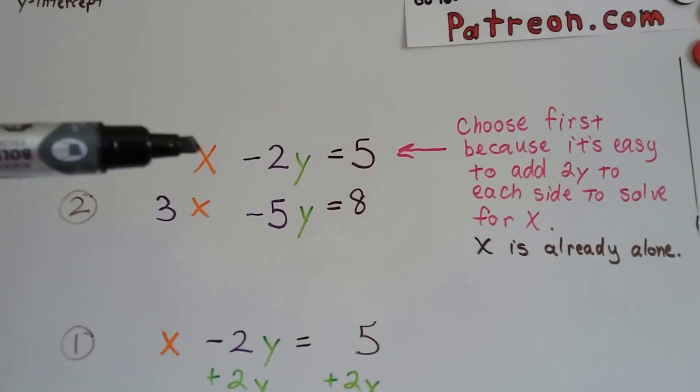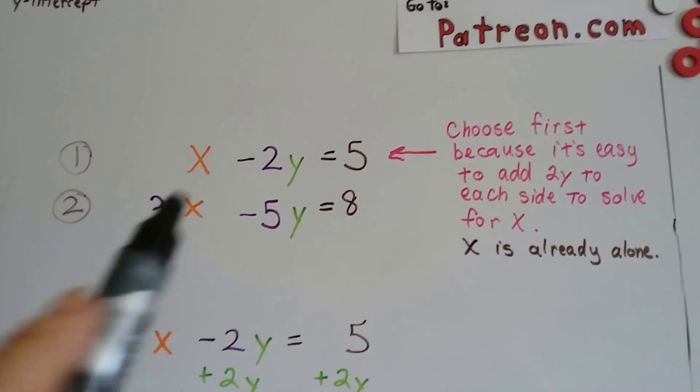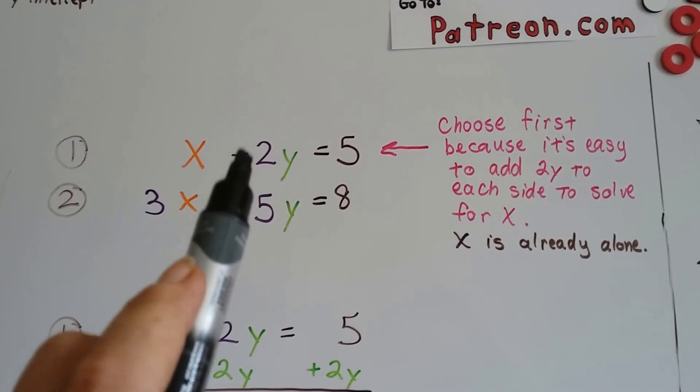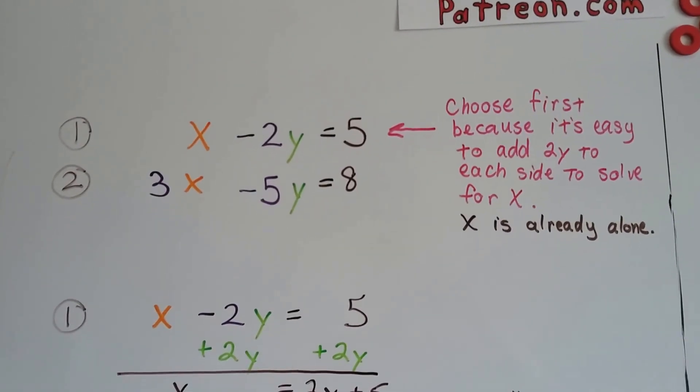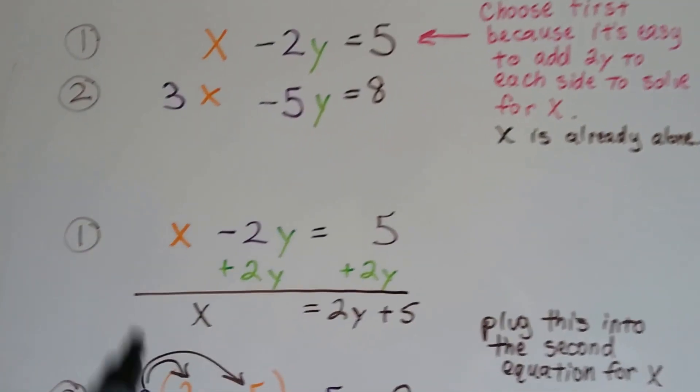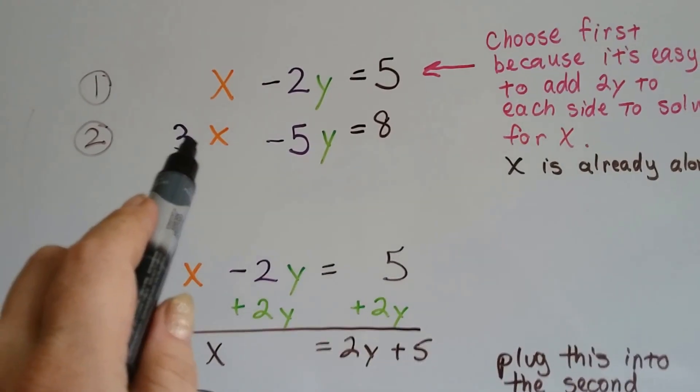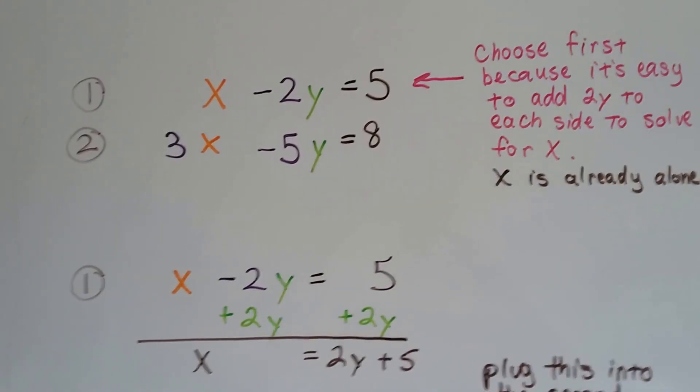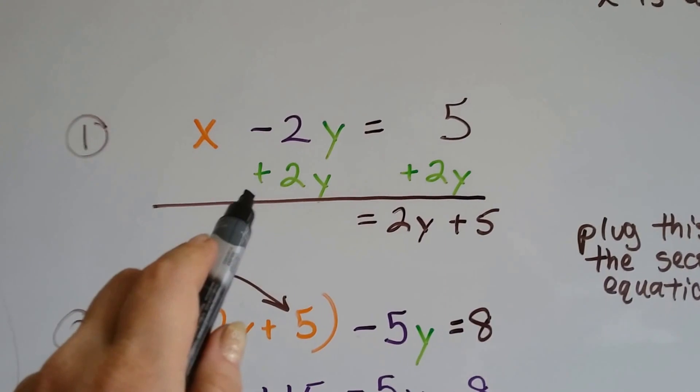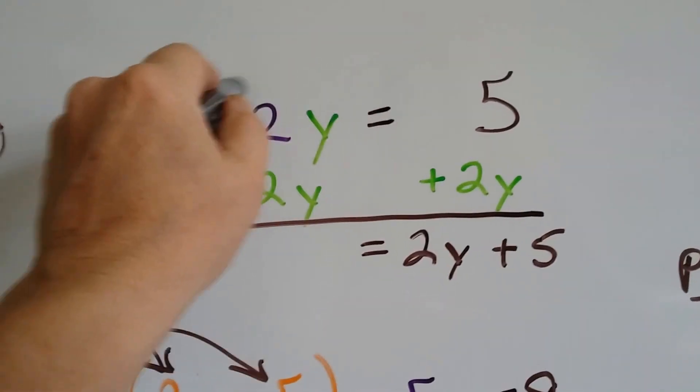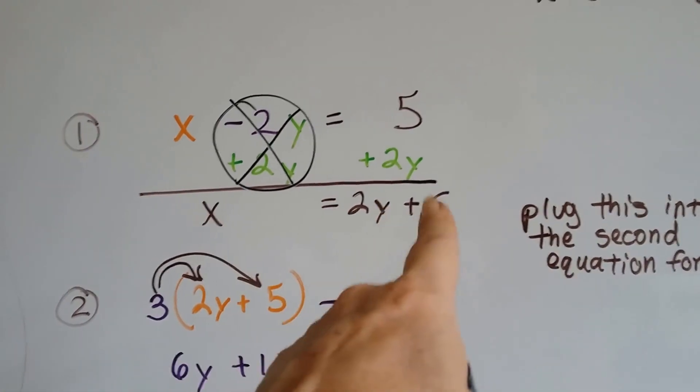We're going to go with this one as our first equation because the x is by itself. There's no coefficient. And look, it would be so easy to just add a 2y to each side to get that x by itself, because it's already alone. If we did it with this one, we'd have to divide by 3 to get rid of this coefficient. But this x is already by itself, so I choose that one first. All I have to do is add 2y to each side, and that x is really by itself. And now we've got x equals 2y plus 5.